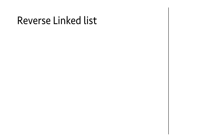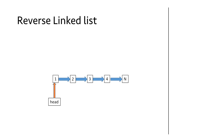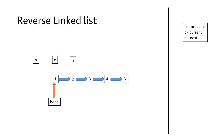Now let's understand how we will actually reverse the linked list by taking an example. For reversing a linked list, we need at least 3 pointers to keep track of the previous node, the current node, and the next node. We take the pointers p, c, and n, which denote the previous, current, and next nodes respectively.